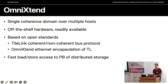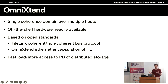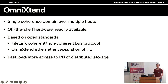So what is OmniExtend, or what is it trying to do? It is an approach to scale out a single coherence domain over multiple hosts using off-the-shelf hardware. We decided to use Ethernet — nothing too esoteric, which is readily available. The whole thing is built on the TileLink bus architecture, which is well-known in the RISC-V world, and provides coherent access to memory, non-coherent access, and atomics. OmniExtend encapsulates the TileLink protocol and puts it into Ethernet frames to distribute.